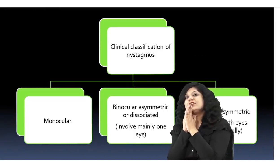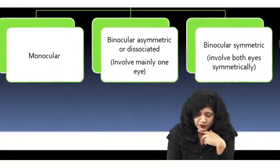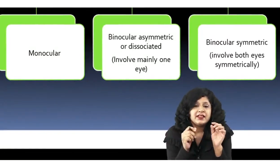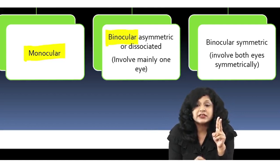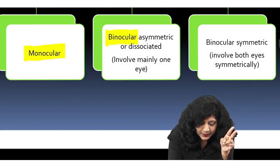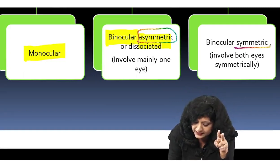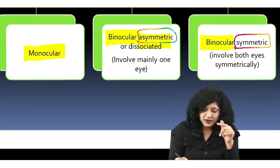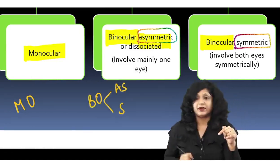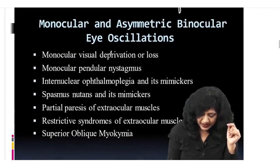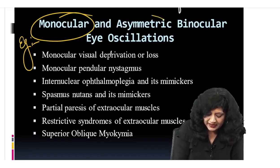Clinical classification of nystagmus: a patient can have monocular nystagmus or binocular nystagmus. Binocular nystagmus can be asymmetrical (both eyes affected but differently) or symmetrical (both eyes affected equally). So there are three varieties: monocular, binocular asymmetric, and binocular symmetric.